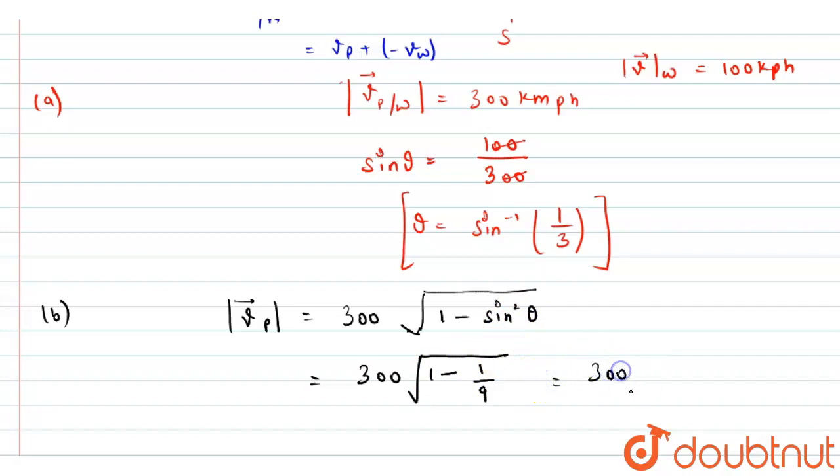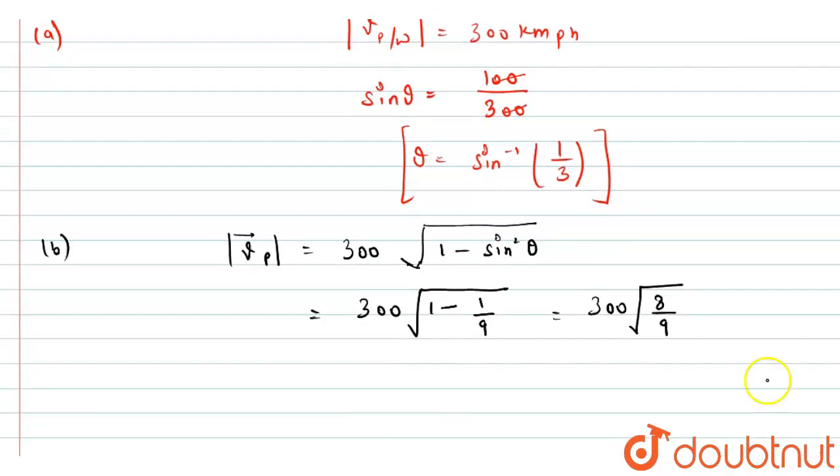So this, we will get 300 into under the root of 8 by 9. And on solving this further, we will get VP vector magnitude as this will become 3 and this will become 100. So this will become 200 root 2 kilometers per hour. So this will be the speed of the plane with respect to the ground. And answer for part B. Thank you.